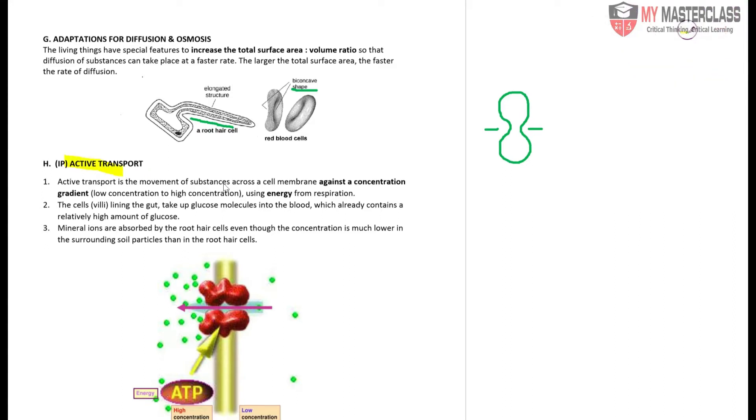Active transport, as the name suggests, is opposite from passive and will require energy. Two areas where this happens: one is in animal cells, which is the gut (small intestines), and the other is root hair cells in plants.